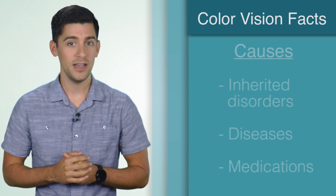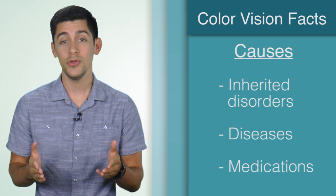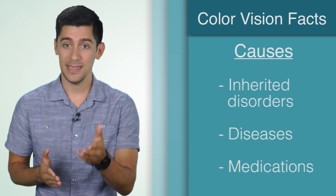There are a few potential causes of poor color vision, including inherited disorders, diseases, and certain medications.